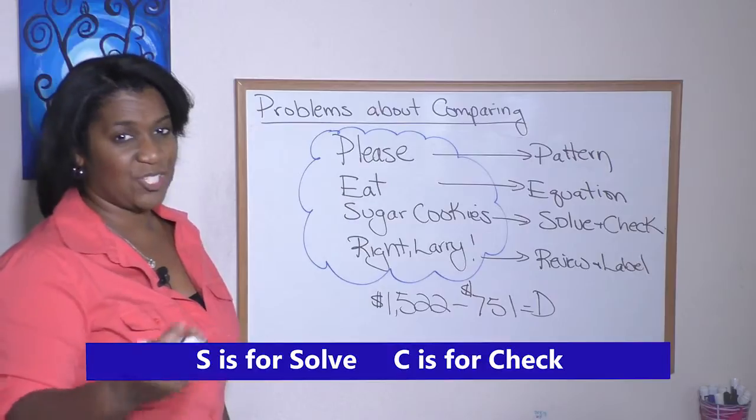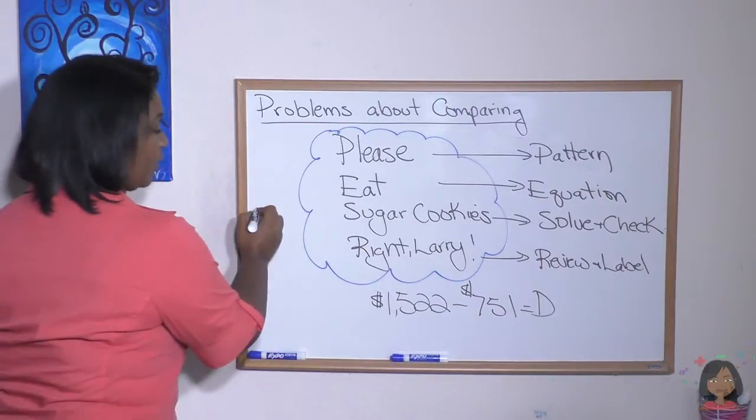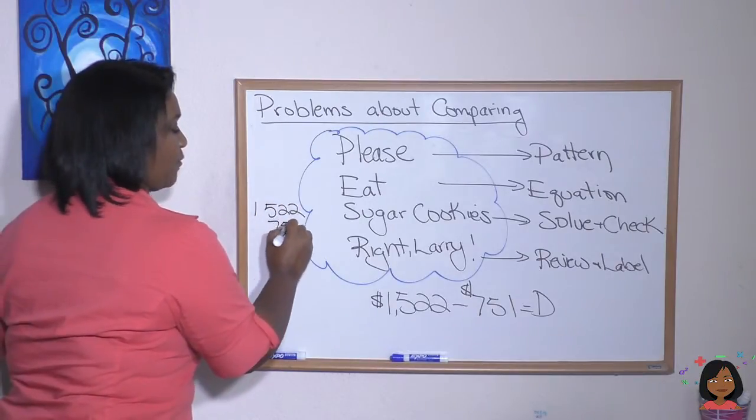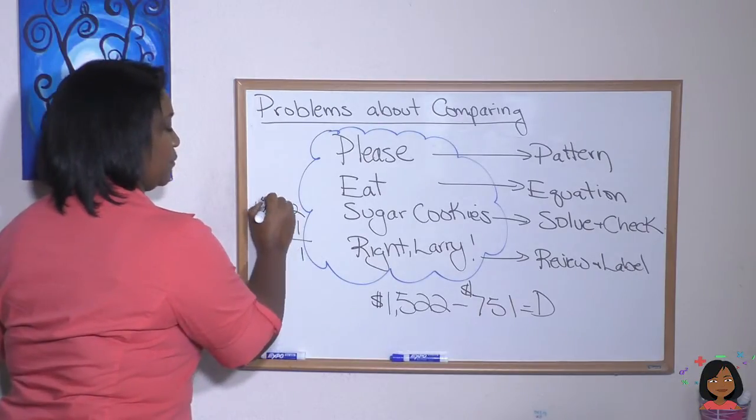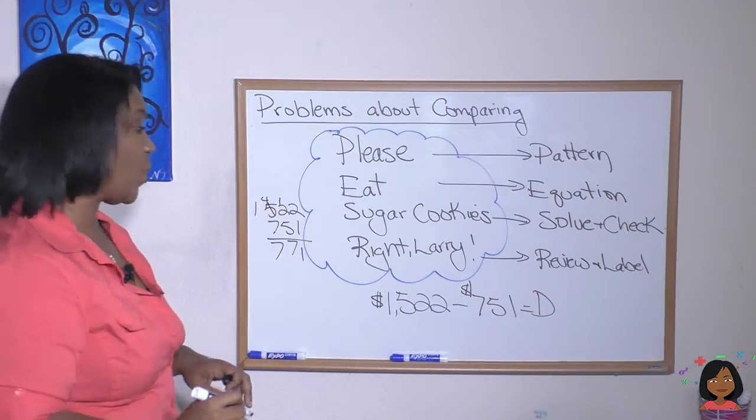Now we're going to solve and check. This is just a simple subtraction problem. I will do it over here to the side. 1, 5, 2, 2, 7, 5, 1. And 7, 7. So $771.